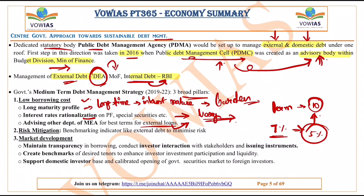The second pillar is risk mitigation, using benchmarking indicators like external debt to minimize risk. Whatever loans the government takes, there have to be indicators against which loans are measured. If the government takes excess loans and has to pay excess interest every year, it will impact the whole economy. The third pillar is market development — requiring transparency in borrowing, investor interaction with stakeholders, and issuing instruments. When borrowing is transparent, investors know where money is going, avoiding crowding out. Benchmarks ensure everything is measured and enhance investor participation and liquidity.